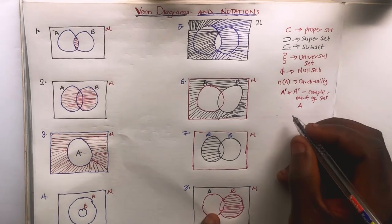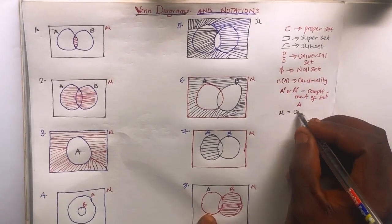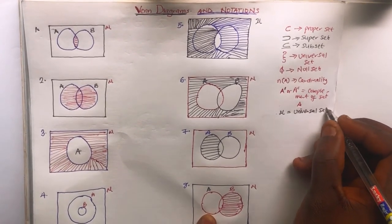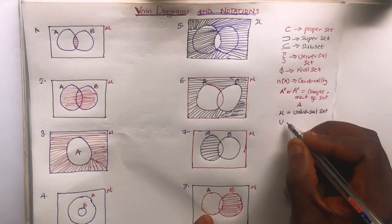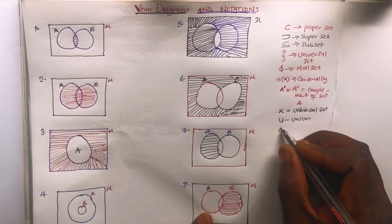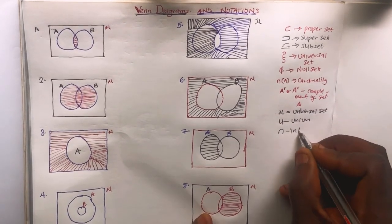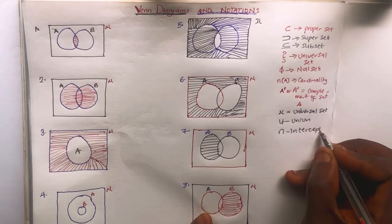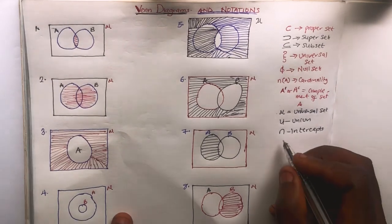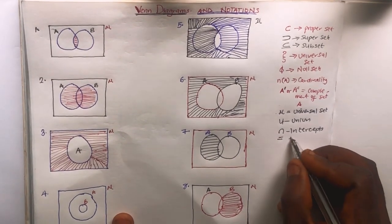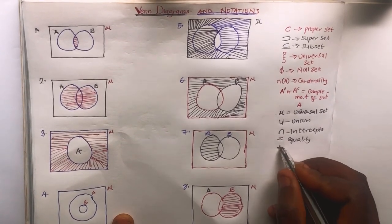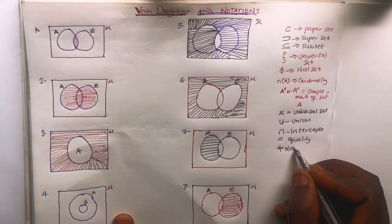Another symbol like this also represents the universal set. The next one — if you have something like this, it denotes the union of two sets. And if you have something like this, it denotes the intersection of the sets. We also have equality of sets — the equals sign means equality — and the not-equal sign means not equality.